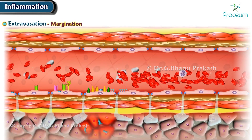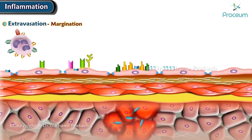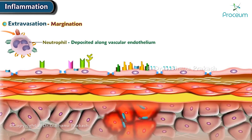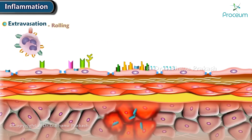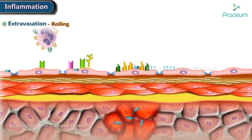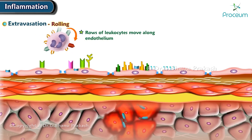First, margination. Leukocytes, especially neutrophils, get deposited along the vascular endothelium. This is called margination. The second step is called rolling. Rolling is when rows of leukocytes move along the endothelium.